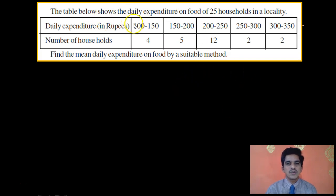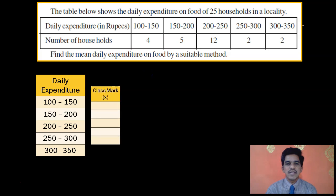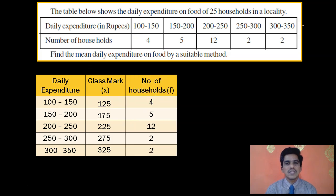So, let us go to another problem so that you can strengthen this concept. Here you are given: the table shows the daily expenditure on food of 25 households in a locality. Find the mean. So, the first thing is you have to write the first column, daily expenditure. Then after writing the first column, you have to calculate class marks.